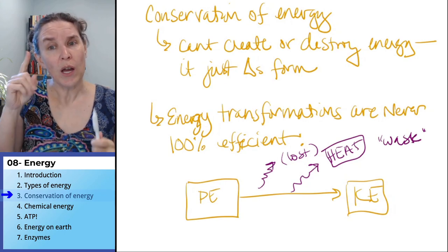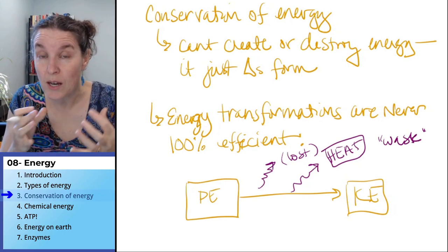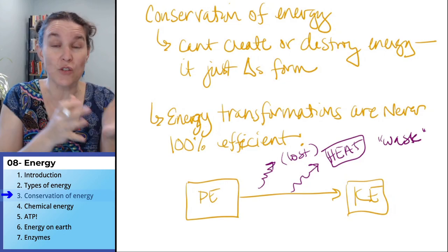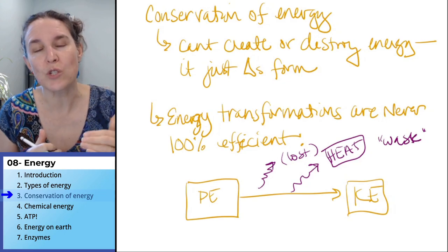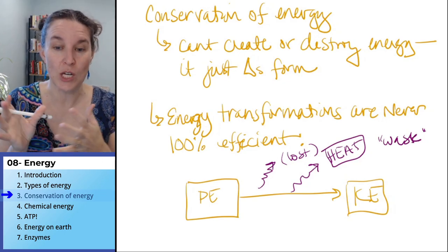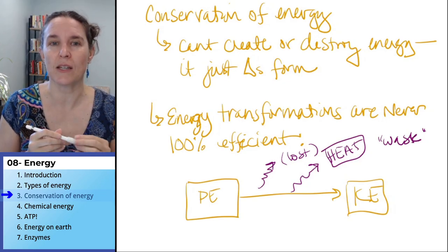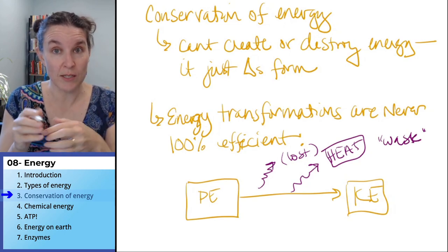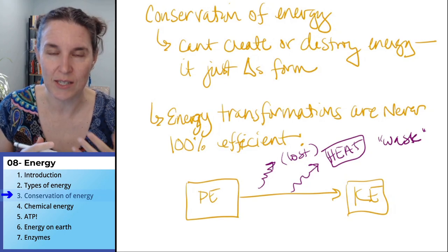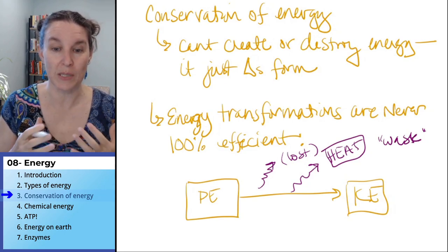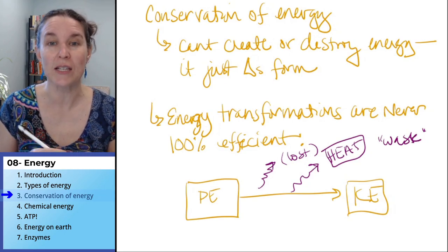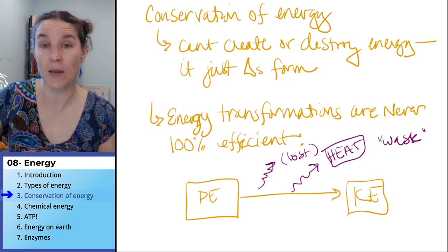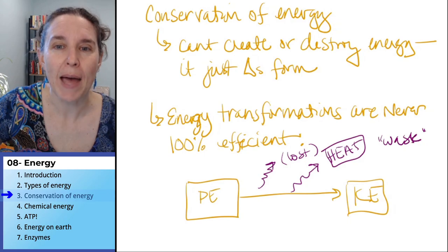So our rules of energy are: you can't create it or destroy it, you can only change forms, and when you do change forms, those changes are never 100% efficient. This is going to be relevant when we look at chemical energy stored as potential energy in chemical bonds. We're going to spend a whole section talking just about chemical energy.